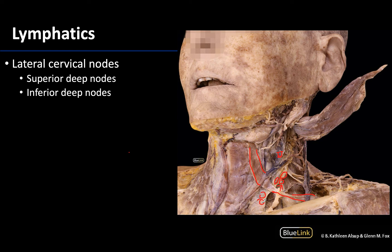The superior deep nodes will drain into the inferior deep nodes, so they go from a superior to inferior region, eventually draining into the jugular trunks. We will discuss in more detail where all the lymphatics ultimately drain in upcoming sessions. But if you can identify the basics of these deep lateral cervical lymph nodes, you should be good for this session. This will wrap up our lymphatics discussion. Please always feel free to reach out with any questions — thank you for your time.